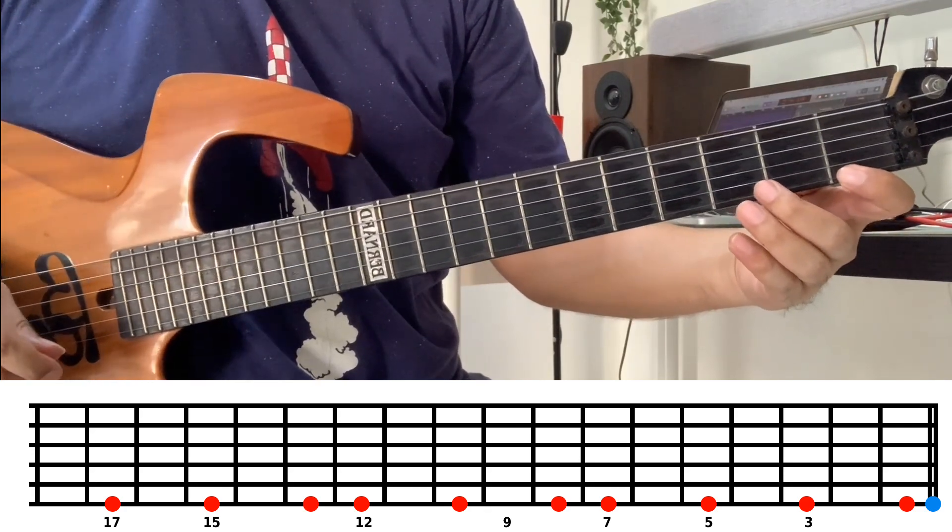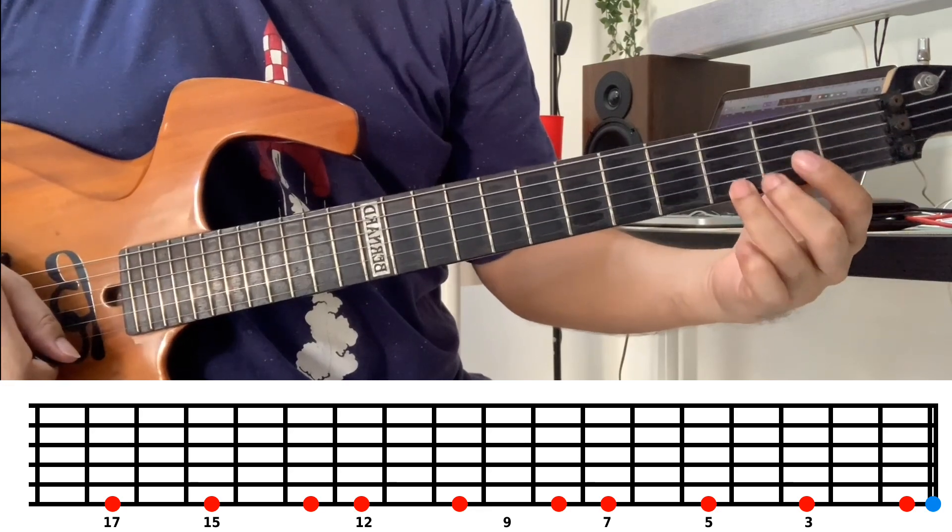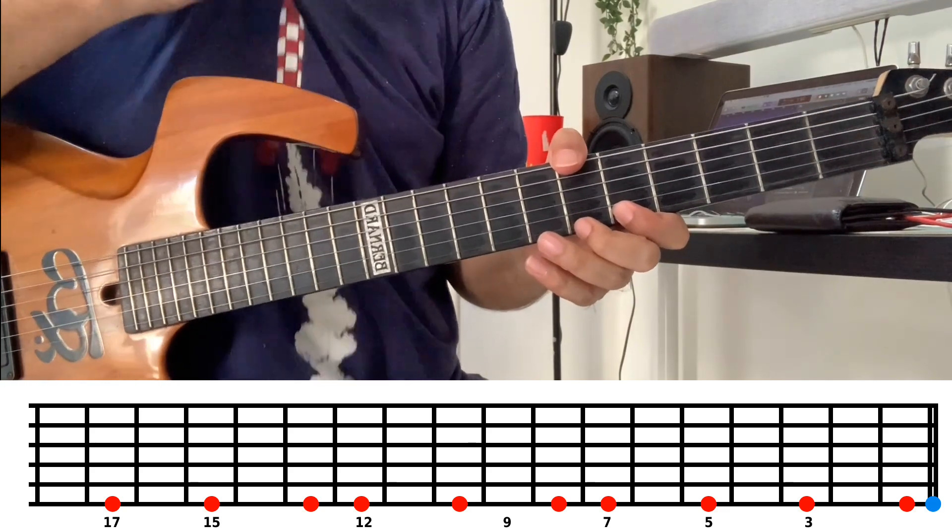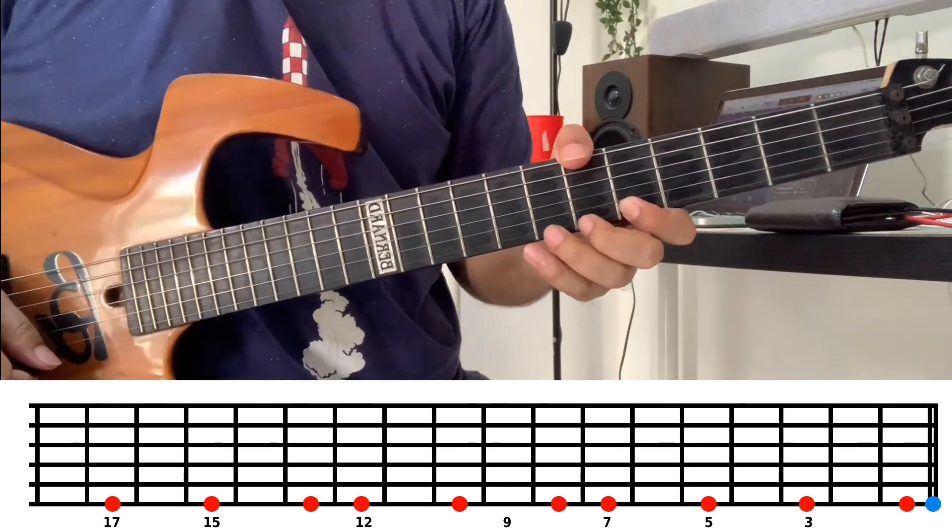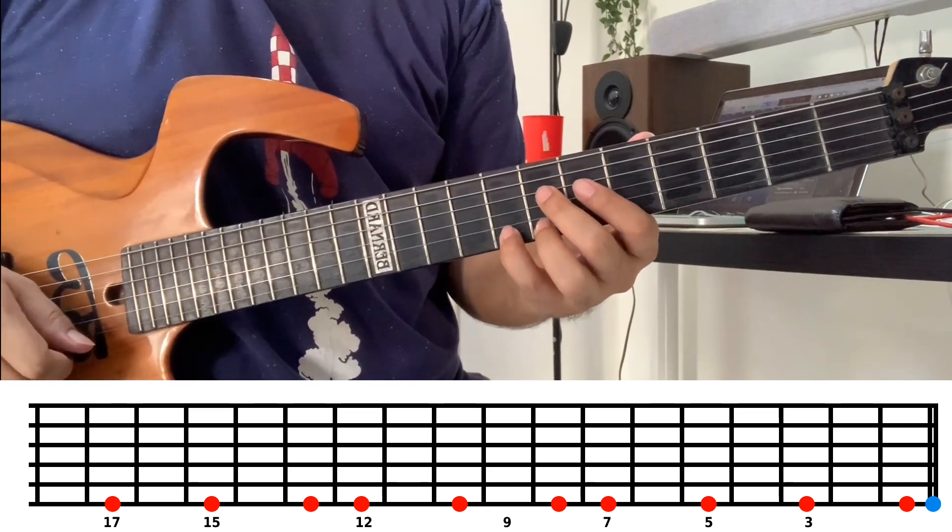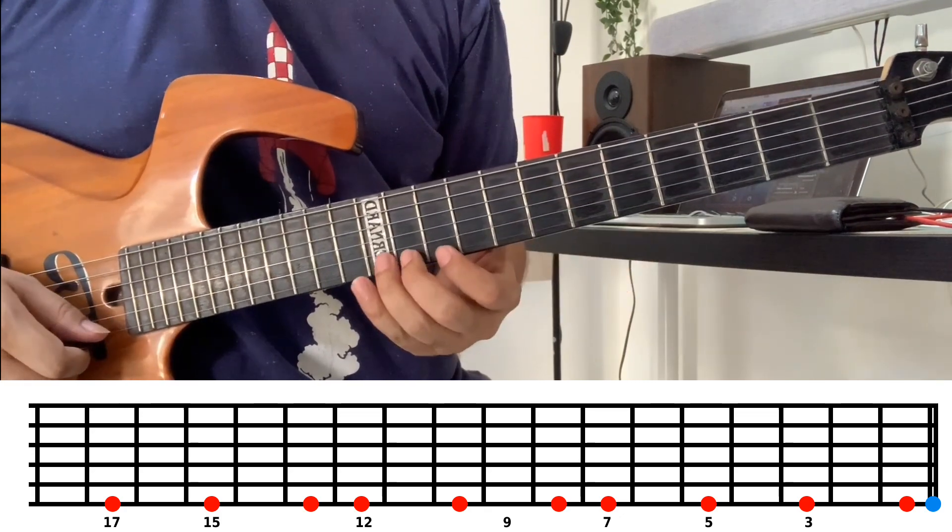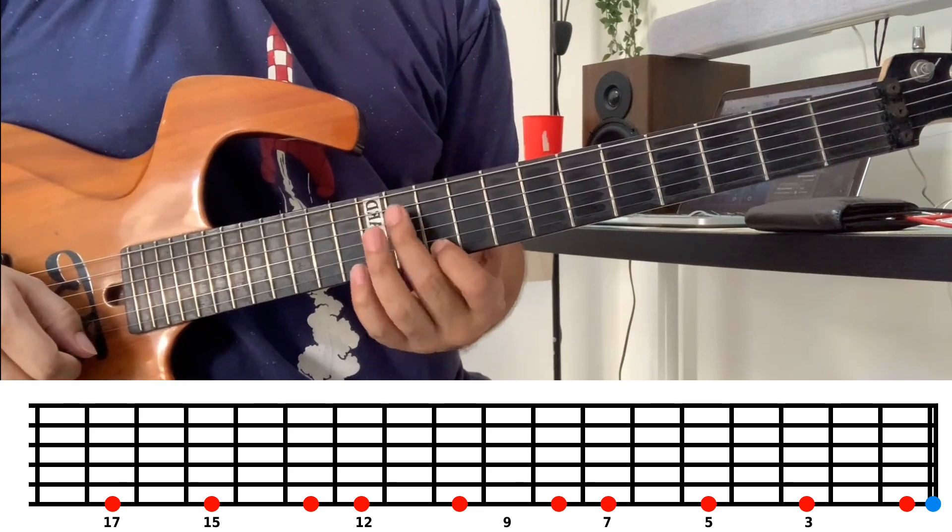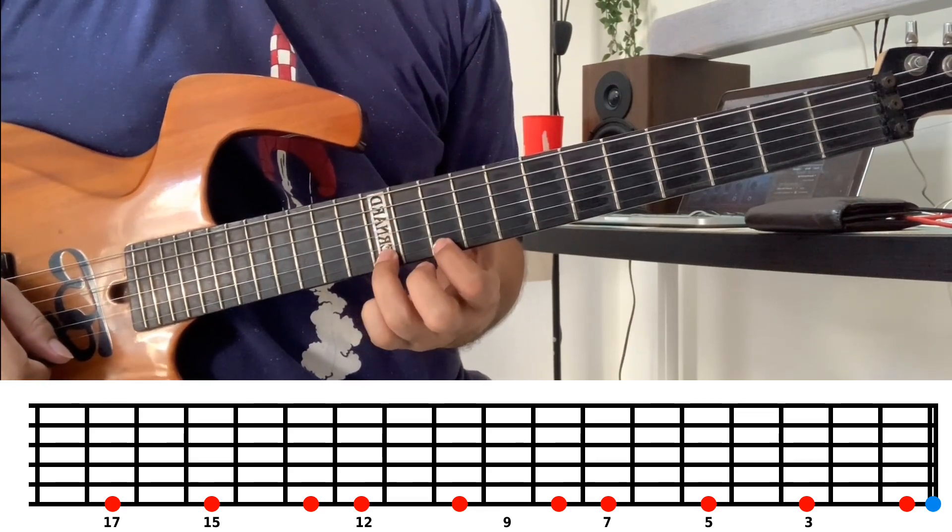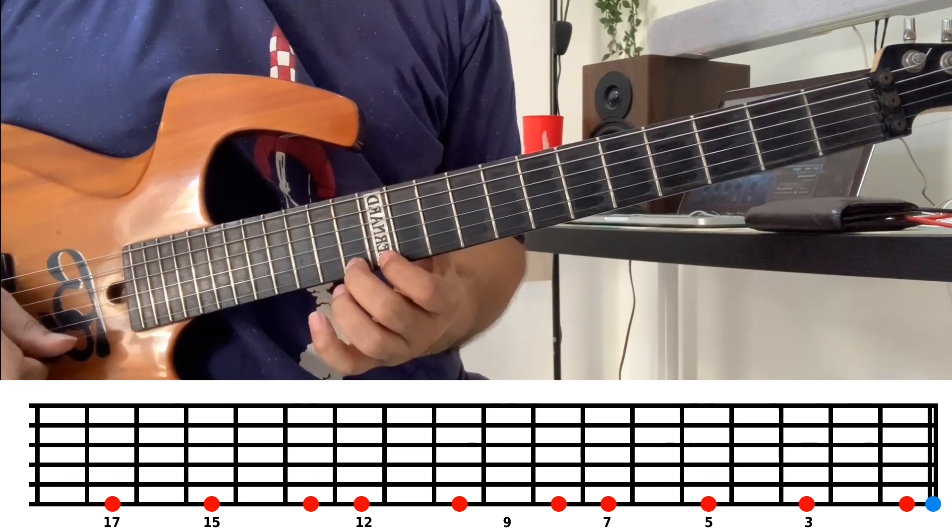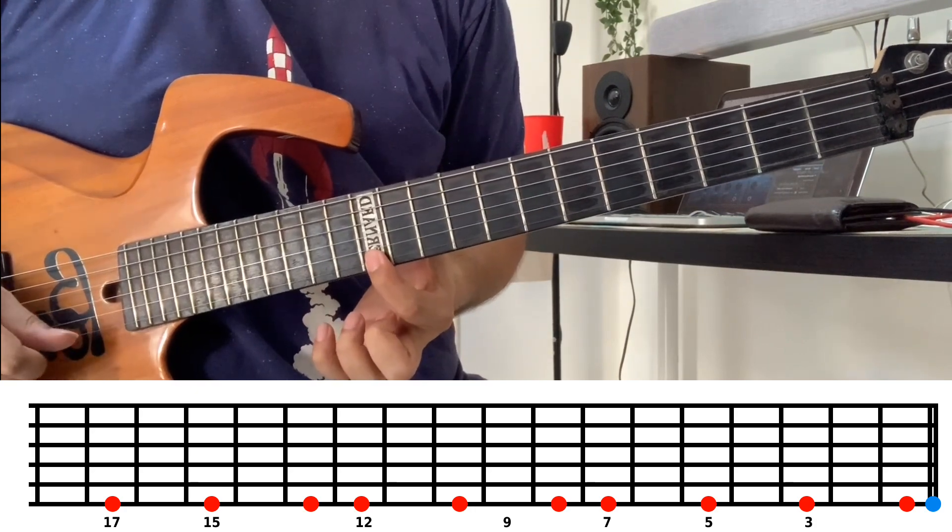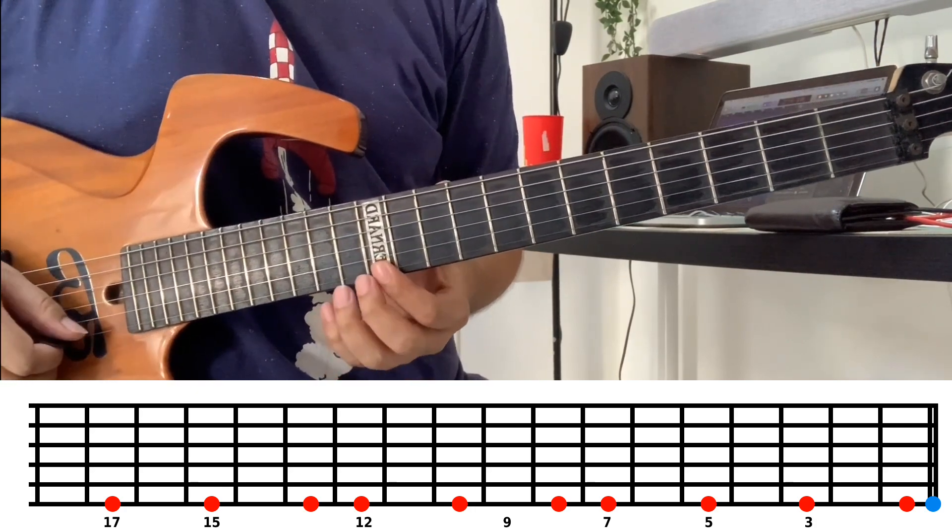Fret three is note G. Fret five on the first string is note A. Fret seven is note B, and fret eight is note C. Then fret ten is note D, first string. And fret twelve is note E. Then fret thirteen returns to note F because fret twelve is exactly the same as the open string.